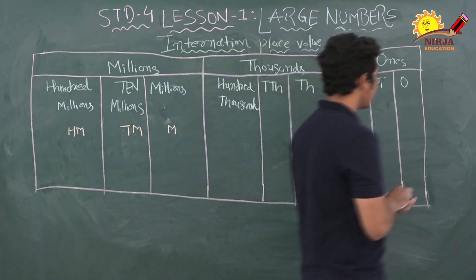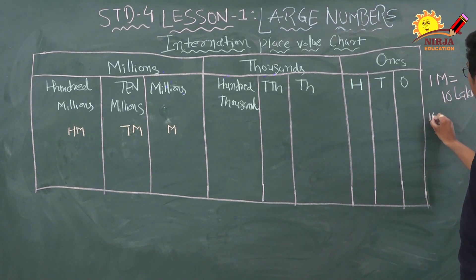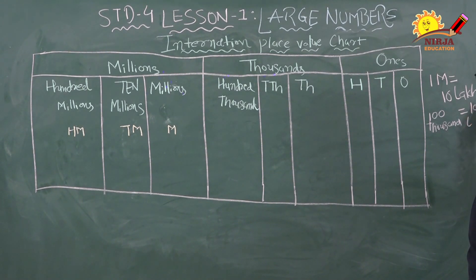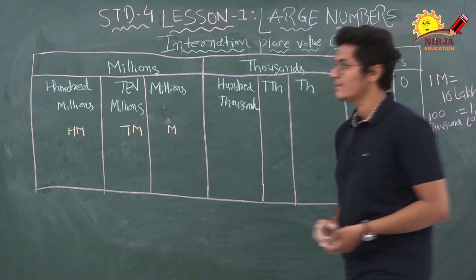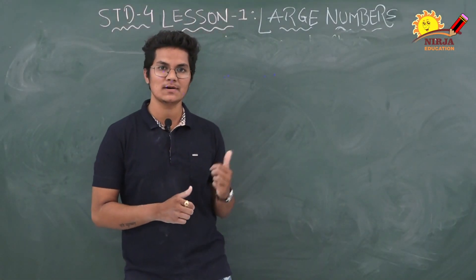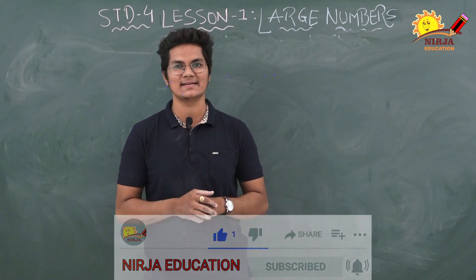You have to remember that one million is ten lakh. We know that one hundred thousand is one lakh, so one million is ten lakh. That's it for today, children. We will learn more about large numbers in our next video. Like, comment, share and subscribe to our channel, and don't forget to press the bell icon. Thank you.